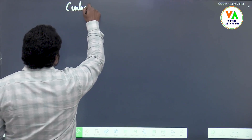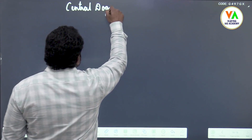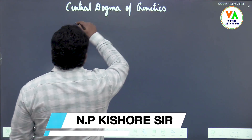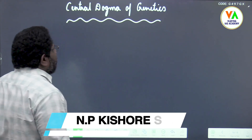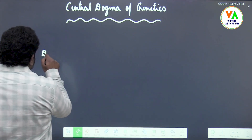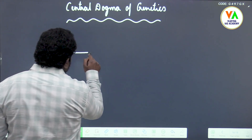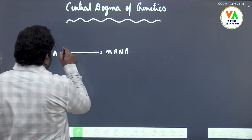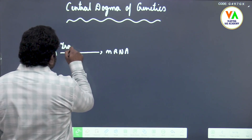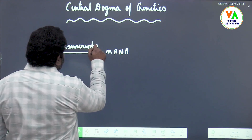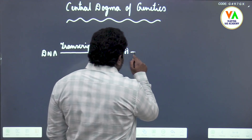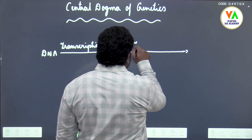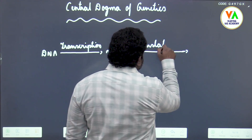We are going in on the central dogma of genetics, which covers the topics given in the syllabus. DNA synthesizes mRNA — this is step number one, which is known as transcription. mRNA, with the help of ribosomes, translates the genetic code present on mRNA, which is known as translation.